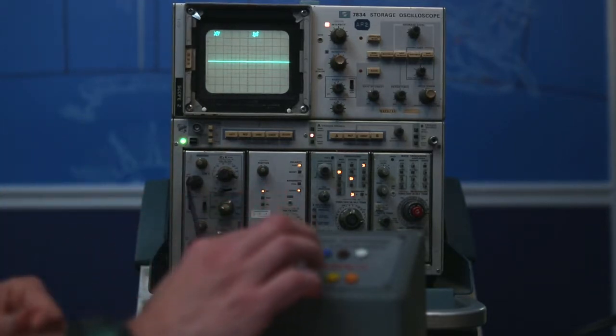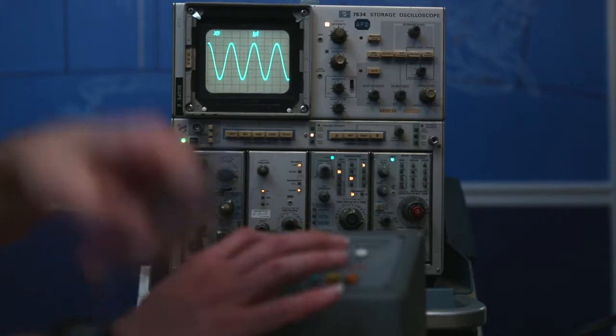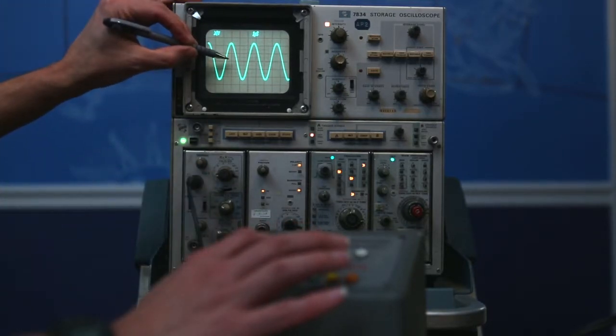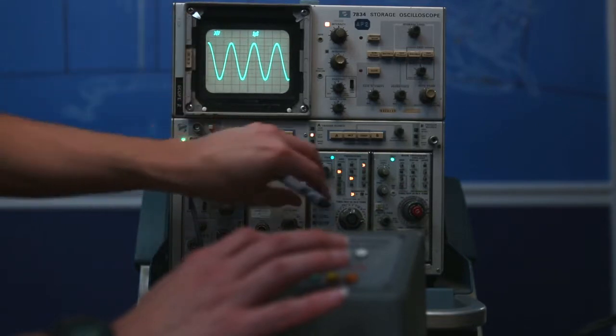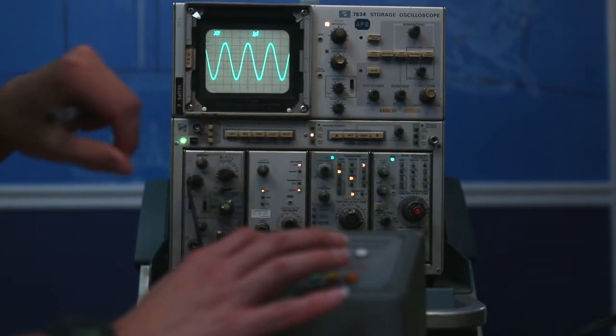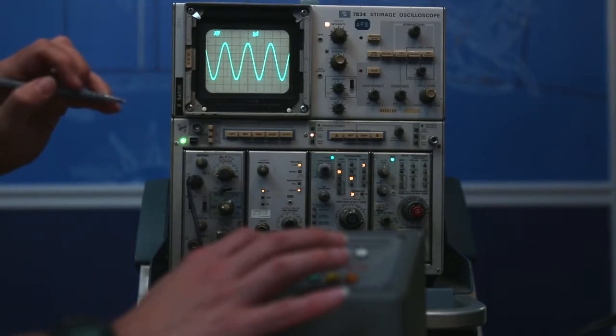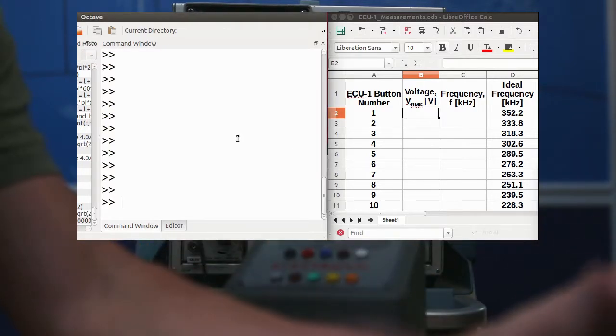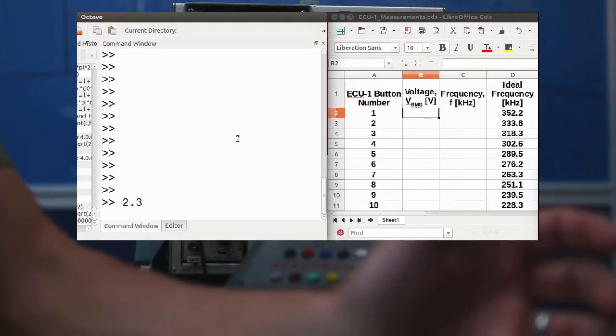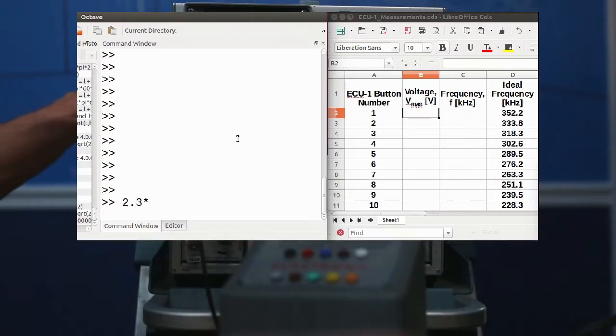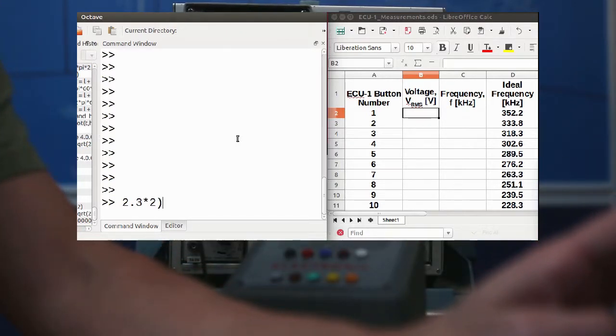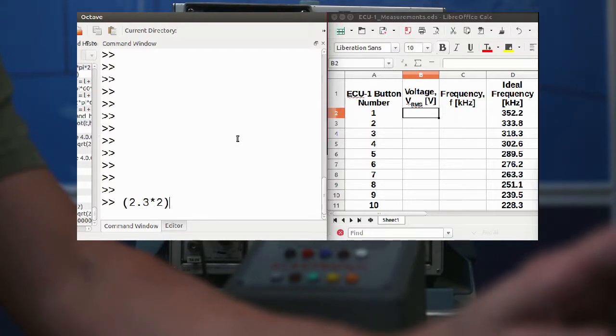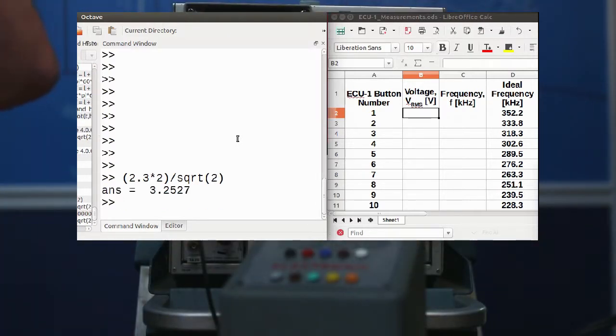Let's check button number 1. And it looks like the peak voltage is 1 to 2.3 divisions. And let's see what that calculates out to be. 2.3 divisions times 2 volts per division, divide it by the square root of 2, and we get 3.3 volts.